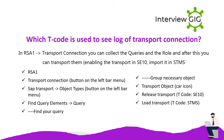Which T-code is used to see the log of transport connection? In RSA12 transport connection you can collect the queries and the roles, and after this you can transport them — enabling the transport in SE10, import it in STMS. RSA8 transport connection: button on the left bar menu, SAP transport to object types button, find query elements to query, find your query group, necessary object transport. Object car icon, release transport T-code SE, load transport T-code STMS.